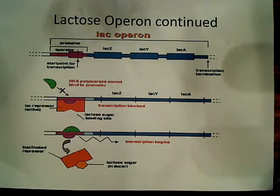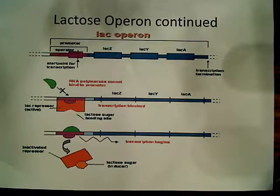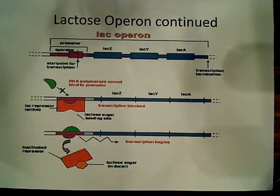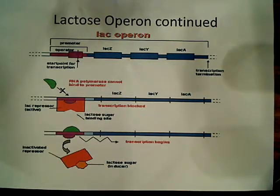That relies on the fact that we need a high concentration of cyclic AMP in the cell. The only way to get that is to remove the inhibition of adenylate cyclase by glucose.